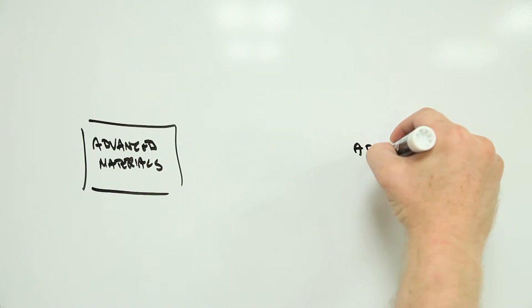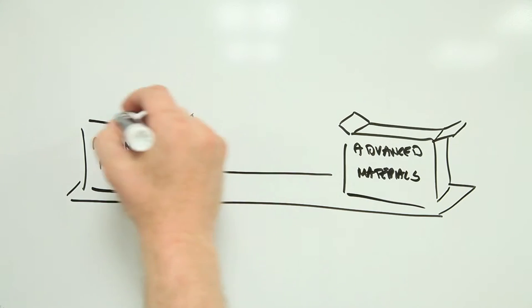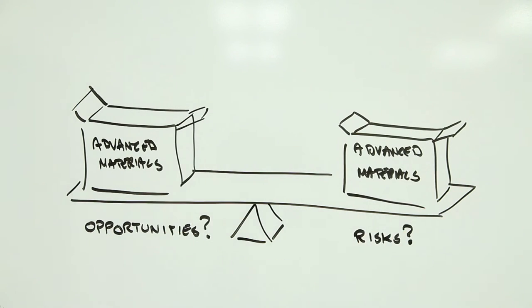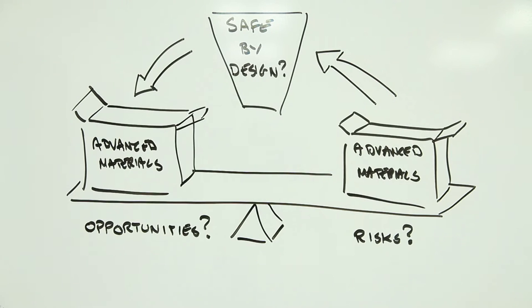If you've been watching Risk Bites over the past six weeks, you'll have a pretty good idea what advanced materials are and what might make them potentially risky. But there's one question that hasn't been addressed so far. Are we smart enough to create advanced materials that are safe by design?